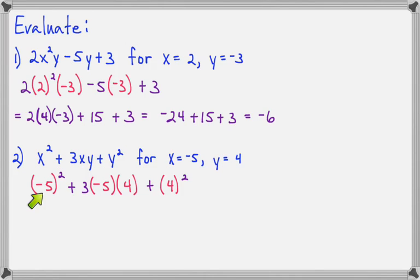Negative 5 squared is negative 5 times negative 5, which is positive 25. 3 times negative 5 times 4 is negative 15 times 4, which is negative 60. And 4 squared is 16. Now 25 minus 60 is negative 35, and negative 35 plus 16 is negative 19.